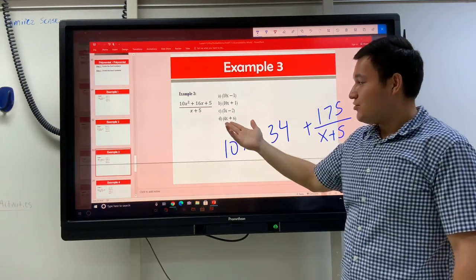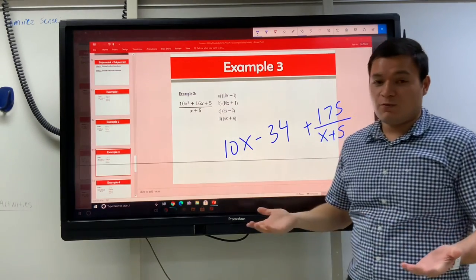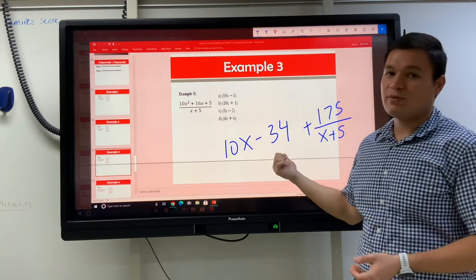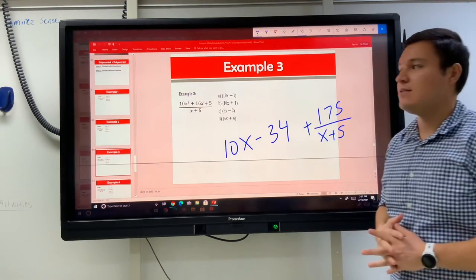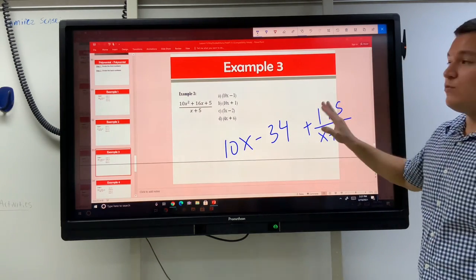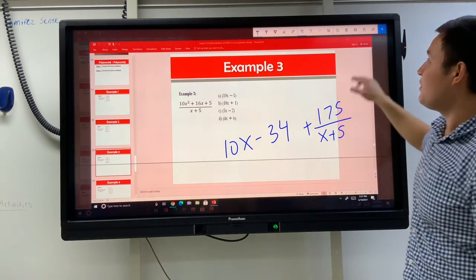You can see that none of these answer choices match this, so that means that's why on your polynomial booklet, we didn't include this problem. We had a different problem instead. But you do need to know what to do if it doesn't fit perfectly, so that's why I wanted to show this example to you still with the remainder.